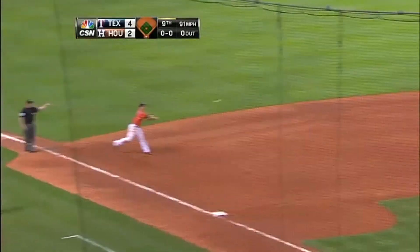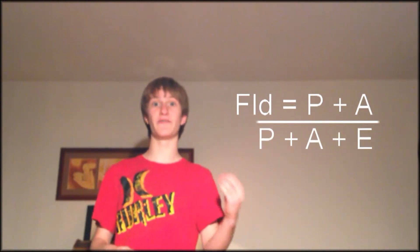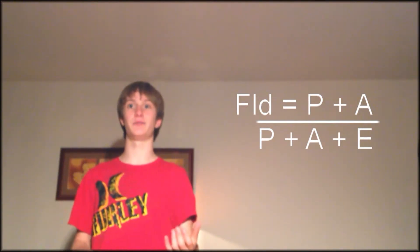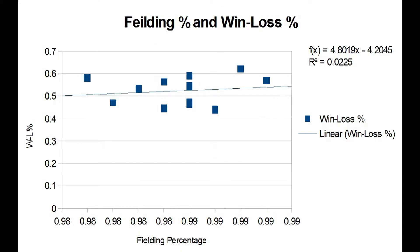We're only going to look at one fielding statistic because fielding is an extremely difficult thing to measure with so many uncontrollable variables. The most widely used fielding statistic is fielding percentage — how many times a player handles a ball well, which is put-outs plus assists, divided by put-outs plus assists plus errors. The Giants' fielding percentages over the past 11 years show very little correlation to win-loss percentage, less than a 0.1 r-squared value, leading me to agree with many others who claim that fielding percentage is a somewhat unfair statistic.